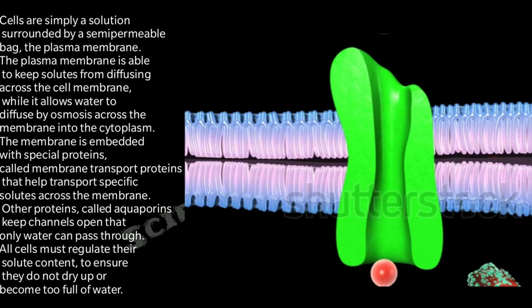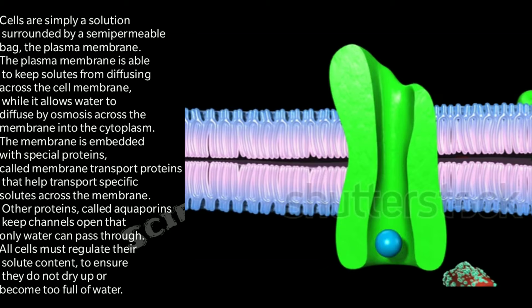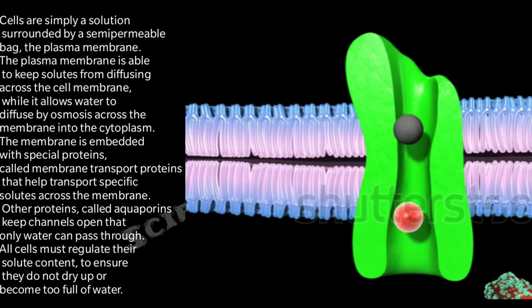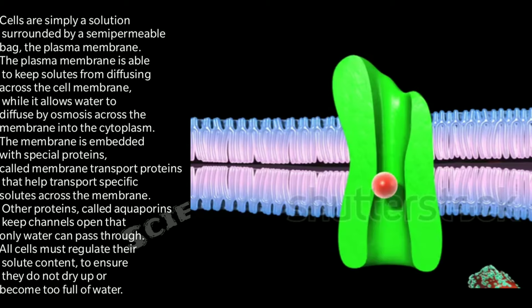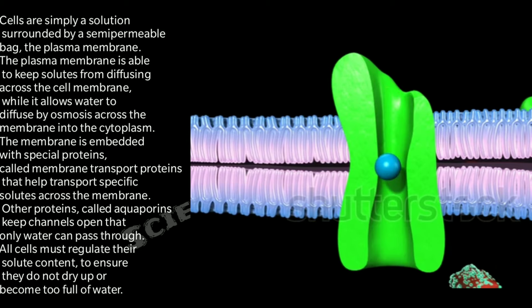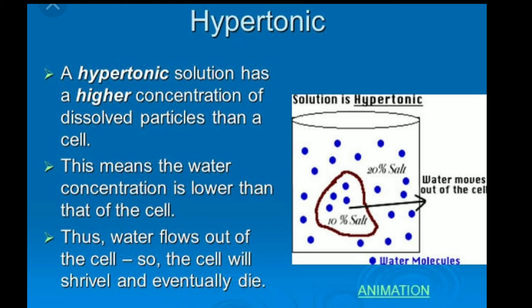Cells are simply a solution surrounded by a semi-permeable bag — the plasma membrane. The plasma membrane keeps solutes from diffusing across while allowing water to diffuse by osmosis. The membrane is embedded with special proteins called membrane transport proteins and aquaporins, which regulate solute content to ensure cells do not dry up or become too full of water. On this basis, there are three types of solutions.